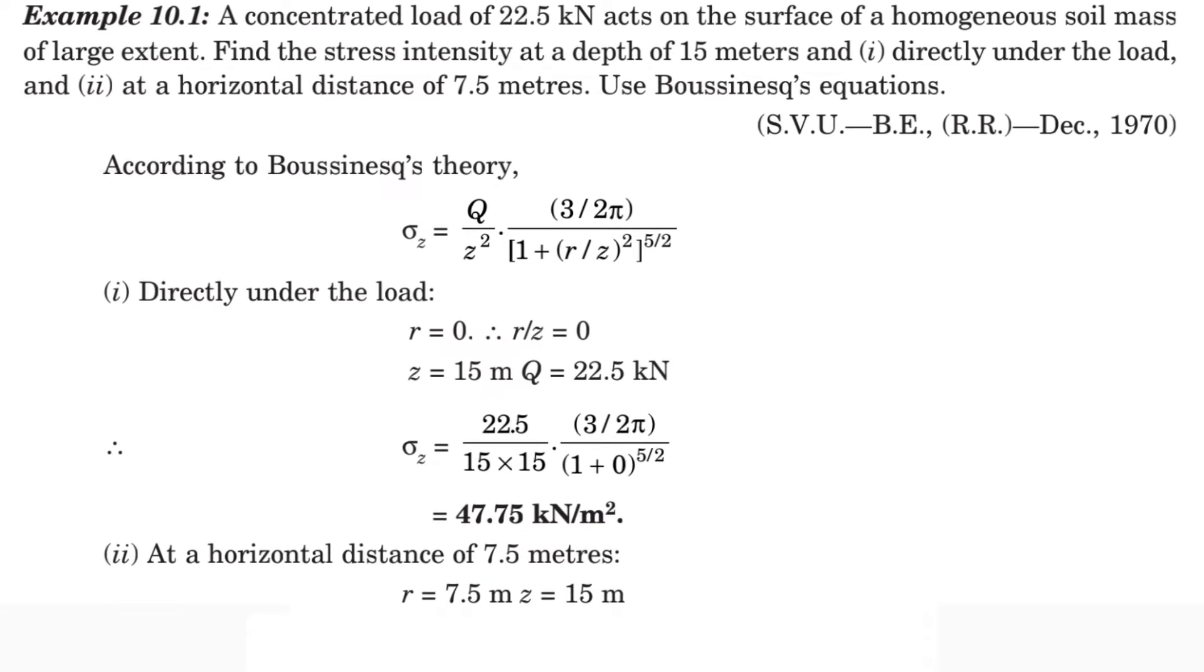We know the formula for Boussinesq's equation. According to Boussinesq's theory, sigma z equals Q divided by z squared, times 3 by 2 pi, divided by [1 plus (r/z) squared] to the power 5 by 2.